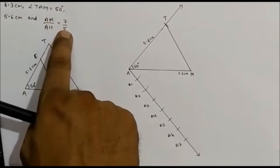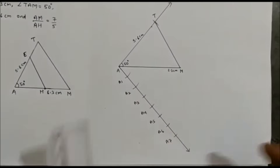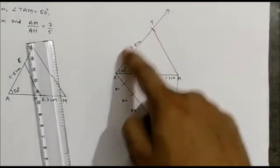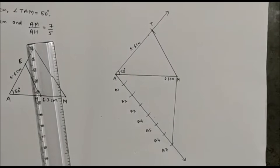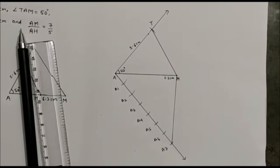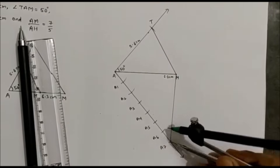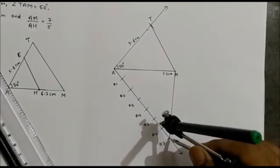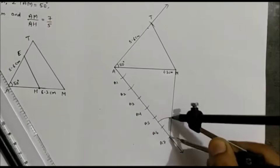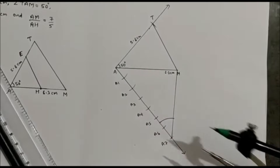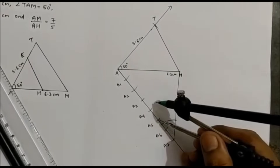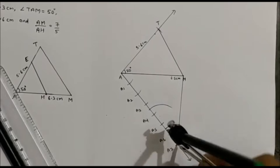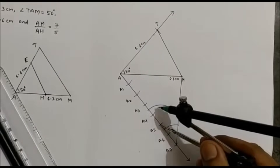Now see the ratio: AM is 7, AH is 5. Since AM ratio is 7, join A7 with M — because the other triangle will come inside this, this is the bigger triangle. Keep the compass on A7 and draw an arc just above the 6th arc, then without changing the distance keep it on the 5th arc and draw an arc there.